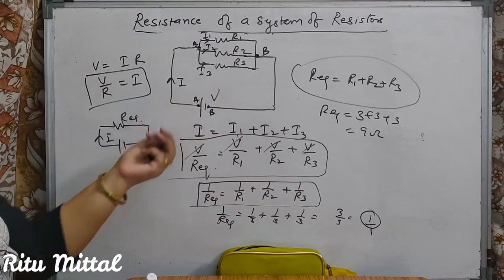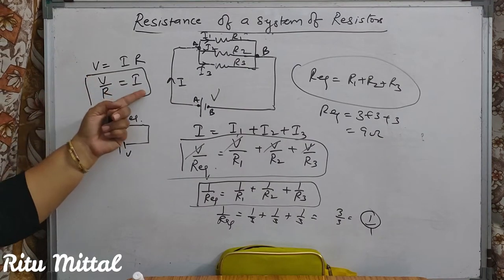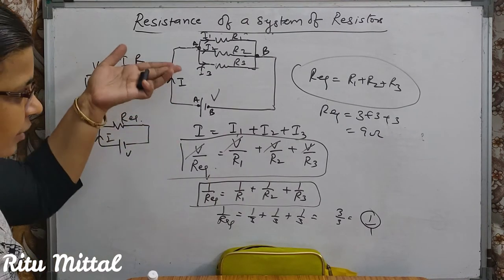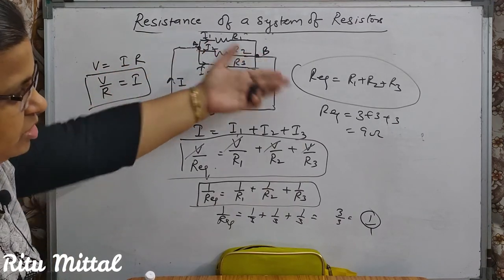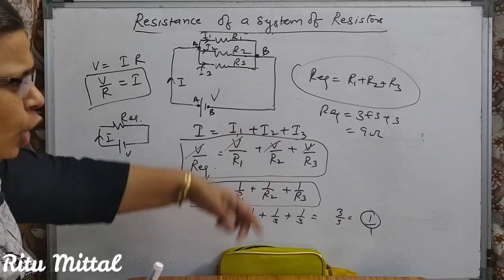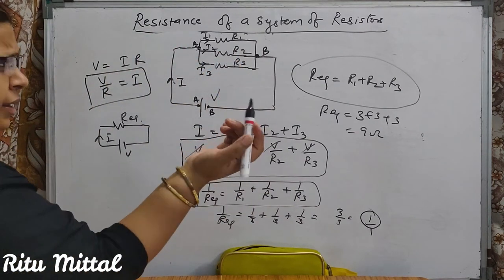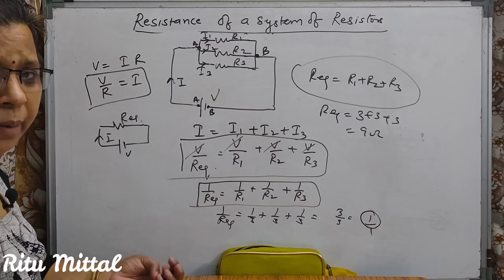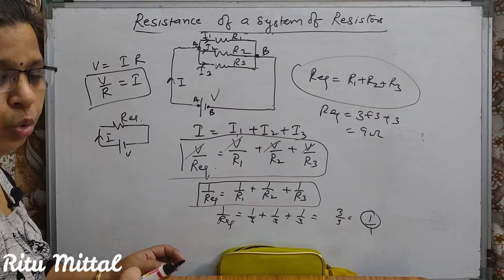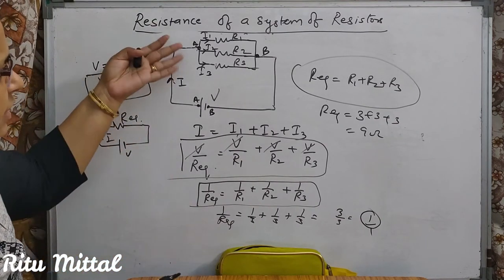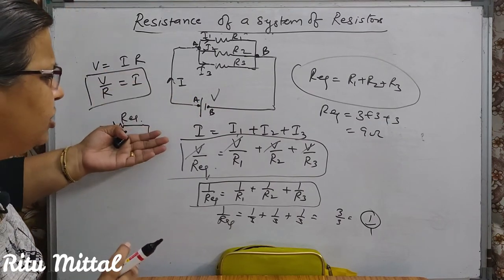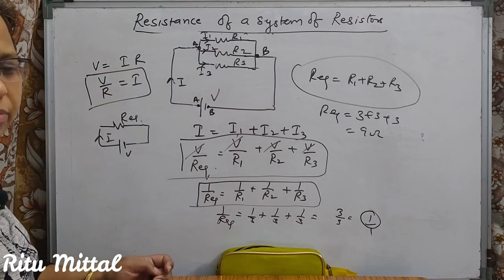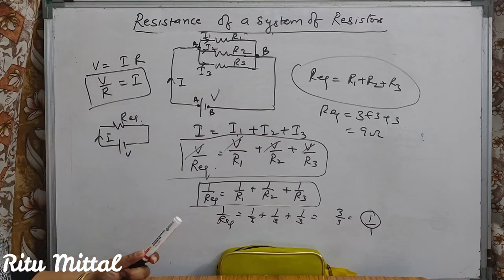Jab net resistance kam hoga, toh I increase hoga — because V/R = I. Very carefully, according to your requirement, you have to connect series or parallel connection. Agar circuit mein zyaada current chahiye toh parallel mein connection lagao. Kam current chahiye toh series mein lagao. Jaisi aapki requirement, aap same resistance ko alag-alag mode mein connect kar sakte ho. That is all students for today.